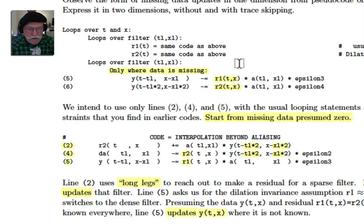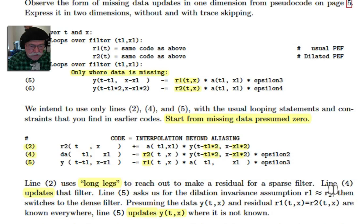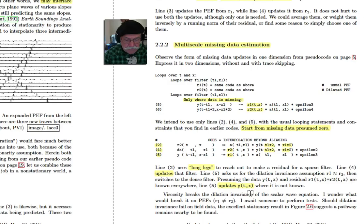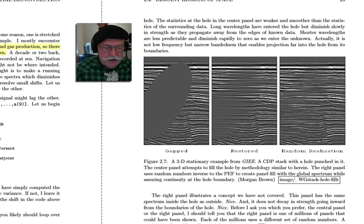So we need to use everything up above. We need to have, in other words, we need to have prediction error filters and dilated and non-dilated. And now we're going to, only where the data is missing, we're going to change it. These things here will get changed where the data is missing. Line 2 uses long lags to reach out to make a residual for a sparse filter. Line 4 updates the filter. Line 5 asks us for the dilation invariance assumption R1 equals R2. And then it switches to the dense filter. Presuming the data and the residual are known everywhere, and we're going to make that assumption because we're going to start from zeros if they're not known. Presuming the data and the residuals are known everywhere, line 5 updates the missing data, updates data where it's missing. I explain to people how to do that code, and I tell them to do it themselves, and we're going to call that the geostatistics code.